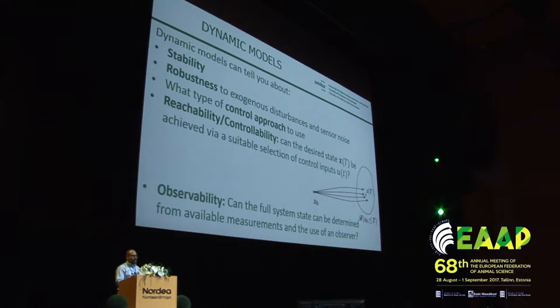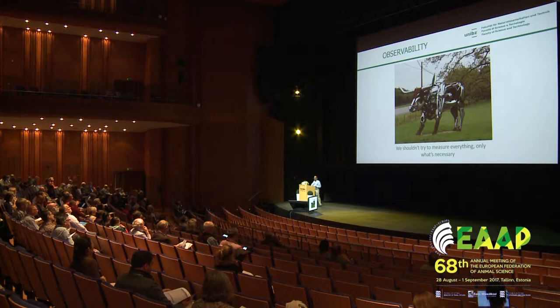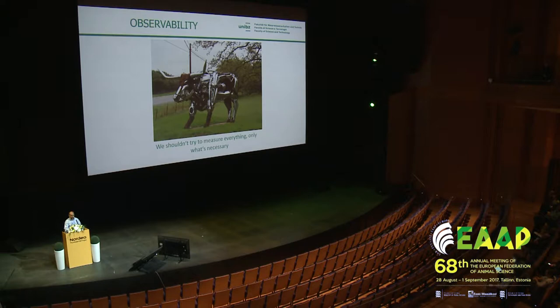We also touch on the issue of observability. You have a lot of data and have to ask yourself: how much of this data do I really need? You don't want animals walking around covered in sensors — you want to measure only what you really need to effectively control the process. The concept of observability can help you understand that.